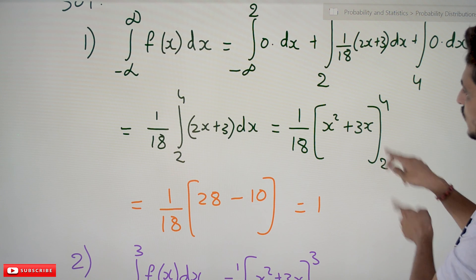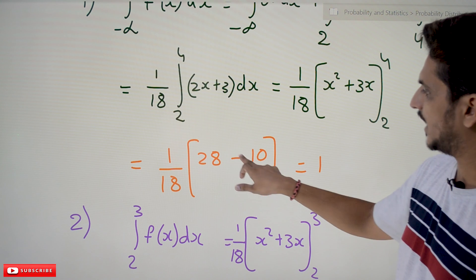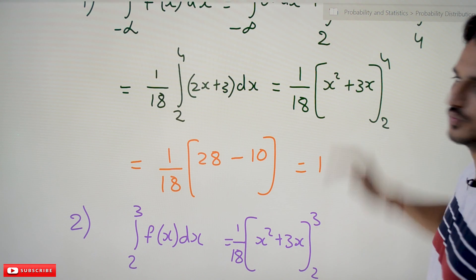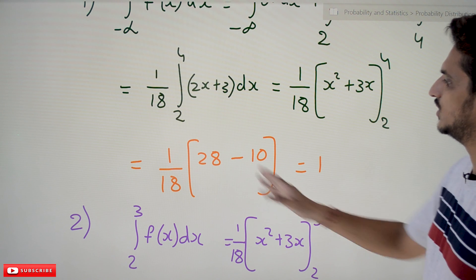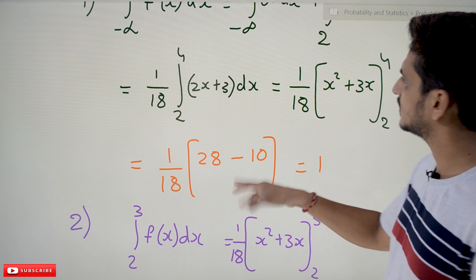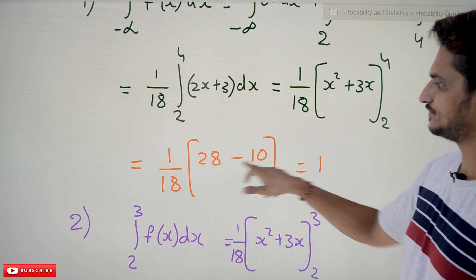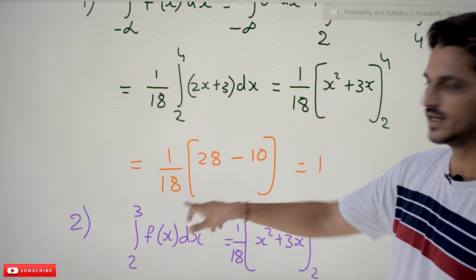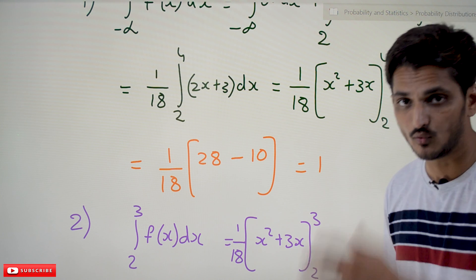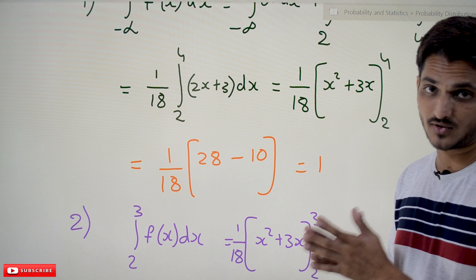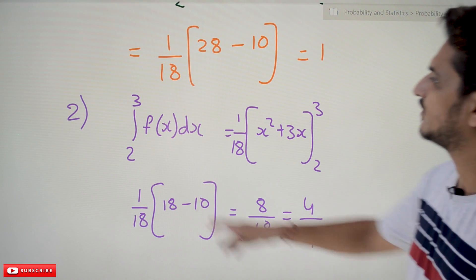Substituting the limits: we evaluate [x² + 3x] from 2 to 4. When x = 4 we get 28; when x = 2 we get 10. So 28 minus 10 equals 18, giving us 18/18 = 1. The area under the function equals 1, so we can accept this function as a probability density function.